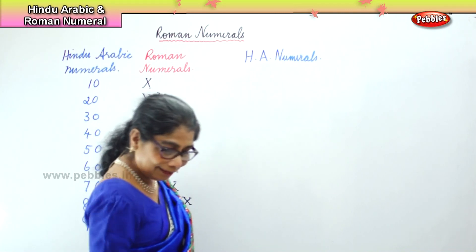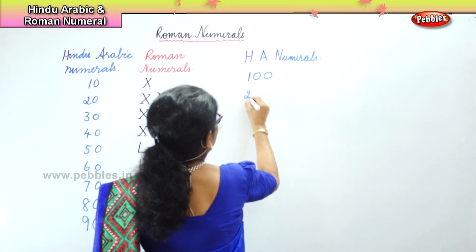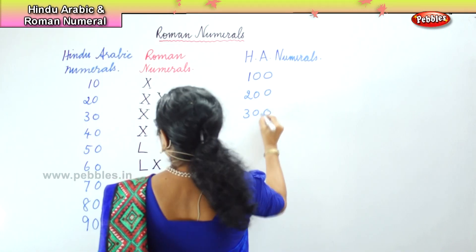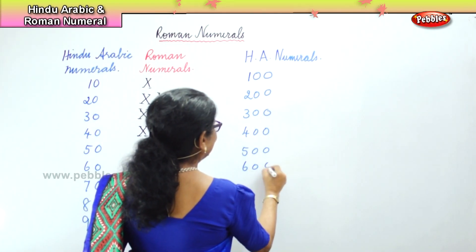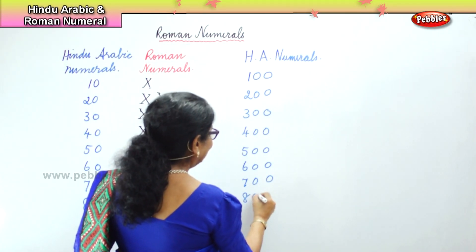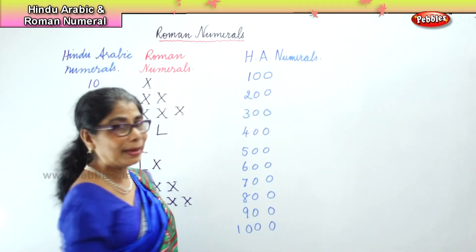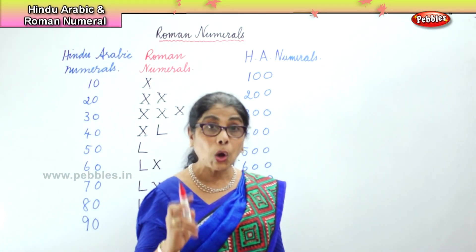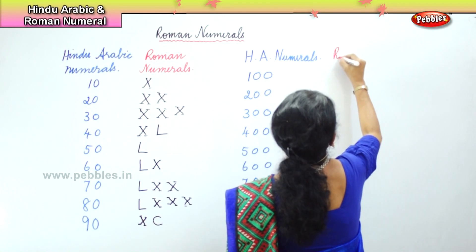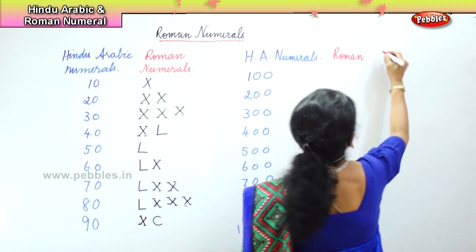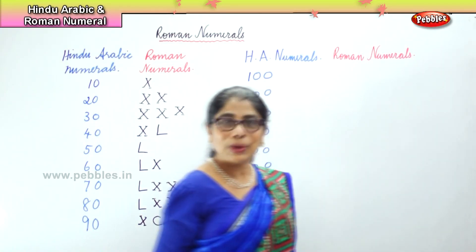We are going to write 100, 200, 300, 400, 500, 600, 700, 800, 900 and then 1000. This we know in Hindu Arabic. Now we are going to build the Roman numerals together.